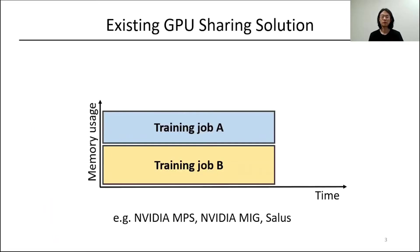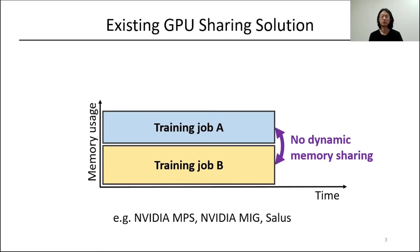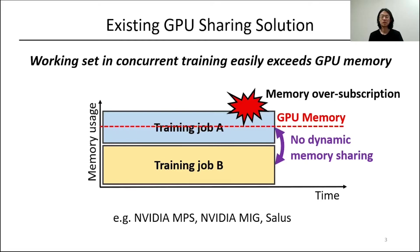Spatial sharing for GPU has already been proposed to resolve the low GPU compute utilization problem by concurrently running multiple jobs. However, existing spatial sharing doesn't share memory across concurrent jobs, but rather statically partitions the memory and allocates it to each job. Hence, if total memory consumption exceeds GPU memory capacity, the system either crashes with out-of-memory or hurts throughput significantly by swapping data between CPU and GPU back and forth.